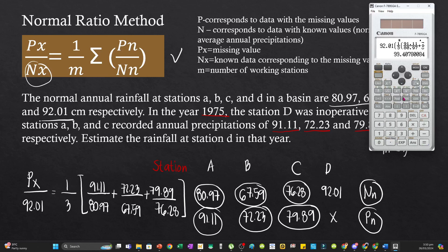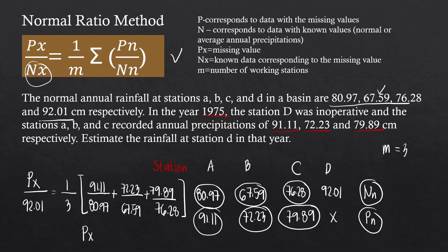This gives us 99.407, and P sub X equals 99.407 cm. This is how you tackle these problems.